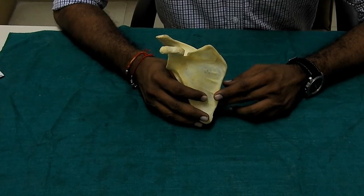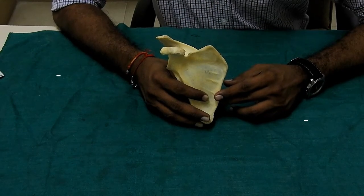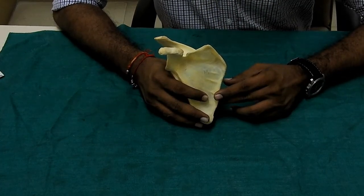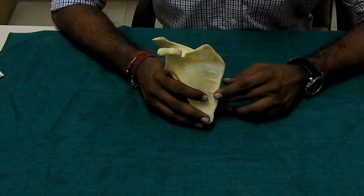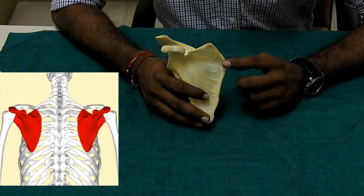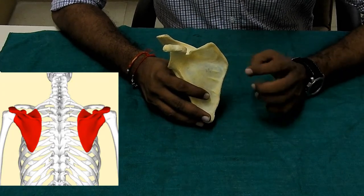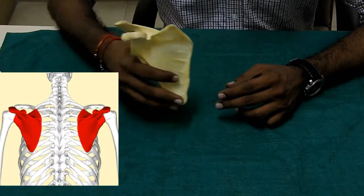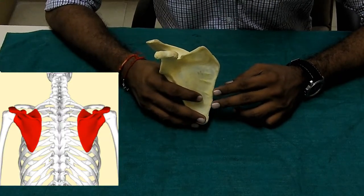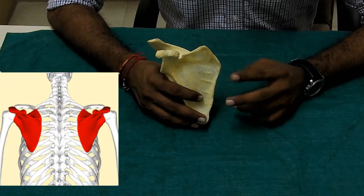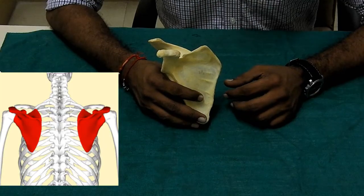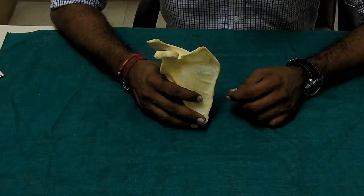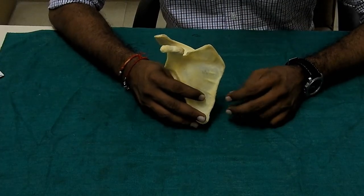Today's topic is the scapula bone, also known as the shoulder blade. It is a flat triangular-shaped bone situated at the posterior lateral aspect of the thoracic cage, against the second to seventh ribs.